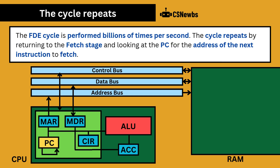Once the instruction has been executed, the cycle will repeat. The FDE cycle is performed billions of times a second, and this cycle repeats by returning to the fetch stage and looking at the program counter for the address of the next instruction to fetch.